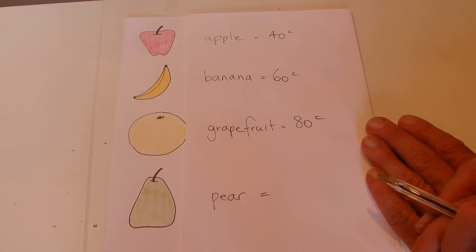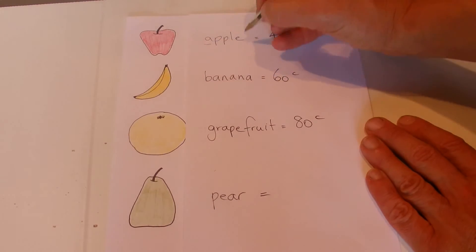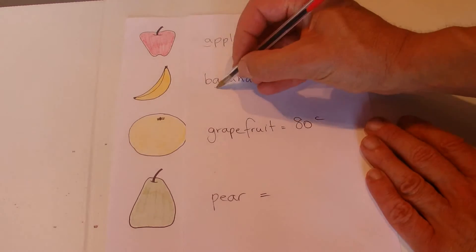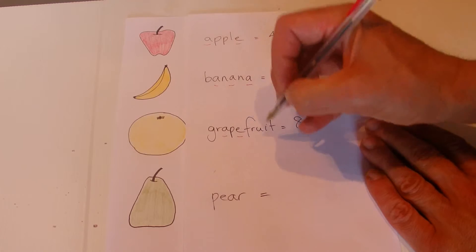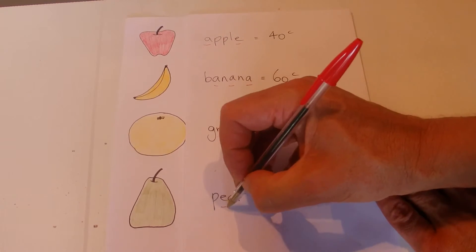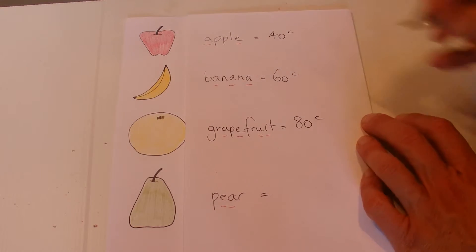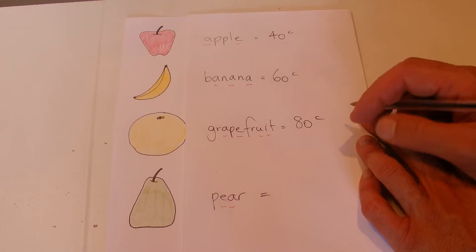So if you have a look there, apple has two vowels, banana has three vowels, grapefruit has four vowels, and pear has two vowels. So if we multiply 20 cents per vowel...